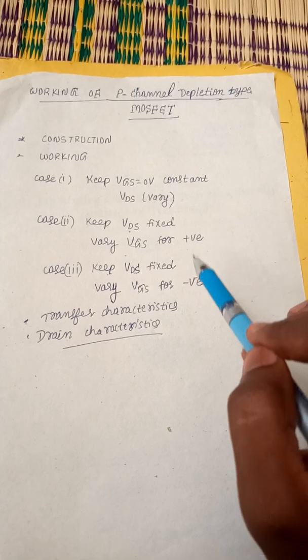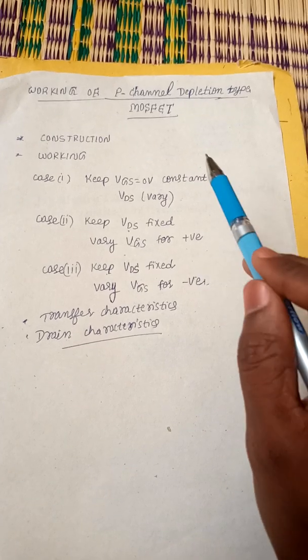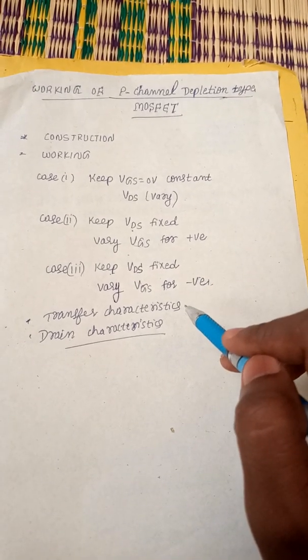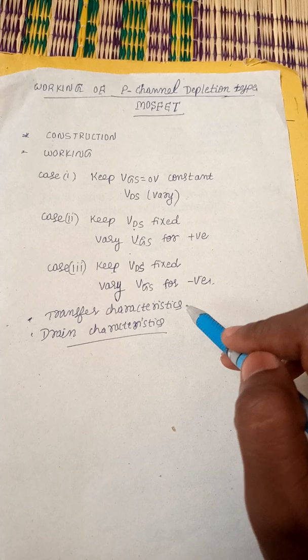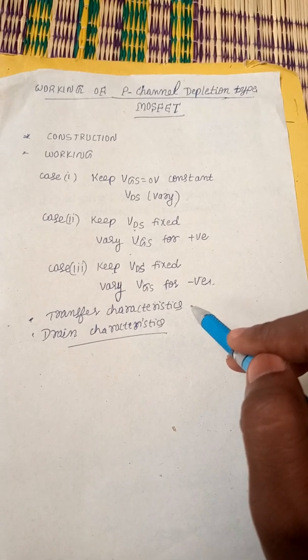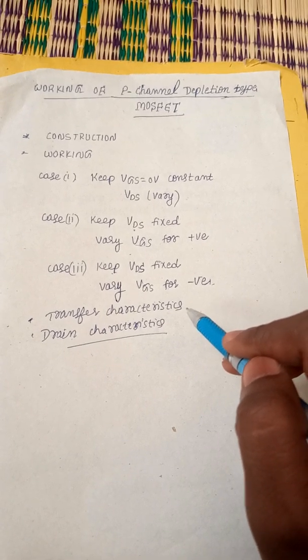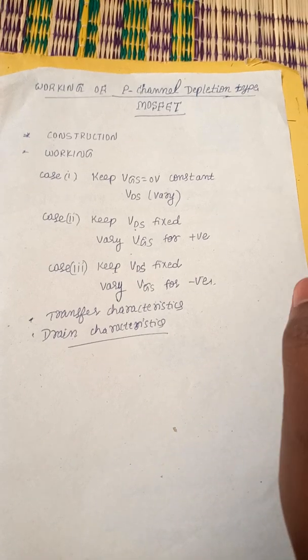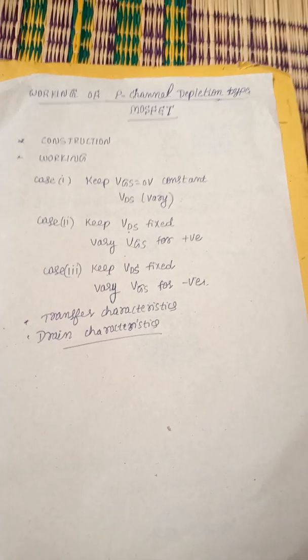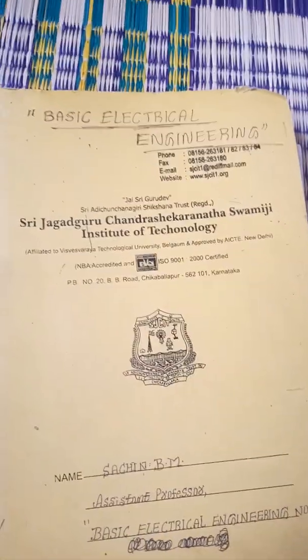Along with the working of the depletion type MOSFET, we are going to study the characteristics of the P-channel depletion type MOSFET — that is, drain characteristics and transfer characteristics. First, we start with the construction part.